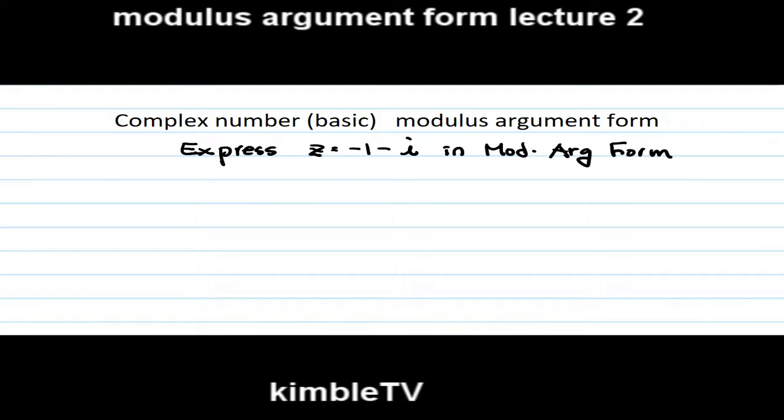Complex number basic modulus argument form: express z equals minus 1 minus i in modulus argument form. This is in Cartesian form.